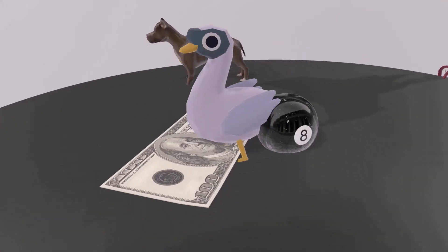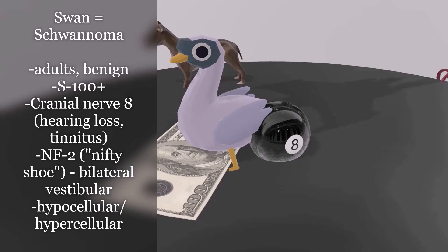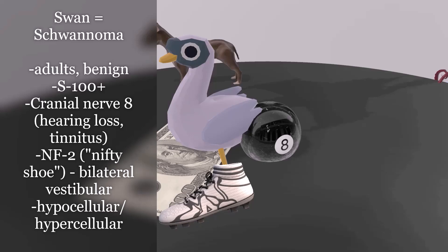Now let's move on to schwannoma. This swan dancing at the beginning is an adult, as schwannoma classically presents in adults. It's a benign tumor of Schwann cells. The swan is standing on a $100 bill, reminding us of the S100 marker, as schwannomas are S100 positive. The 8-ball reminds us of cranial nerve 8 — a schwannoma is especially common on cranial nerve 8 in the internal acoustic meatus, so patients may present with loss of hearing and tinnitus. The nifty shoe reminds us of NF2, as bilateral vestibular schwannomas are found in neurofibromatosis type 2. Histologically, a schwannoma is characterized by dense hypercellular areas with spindle cells alternating with hypocellular myxoid areas.